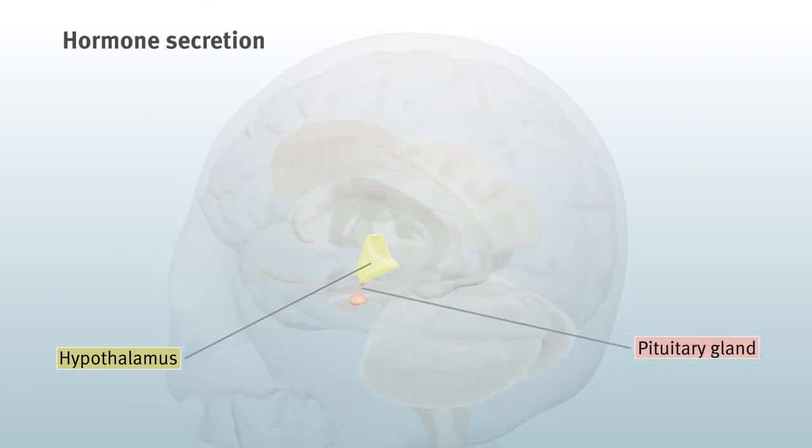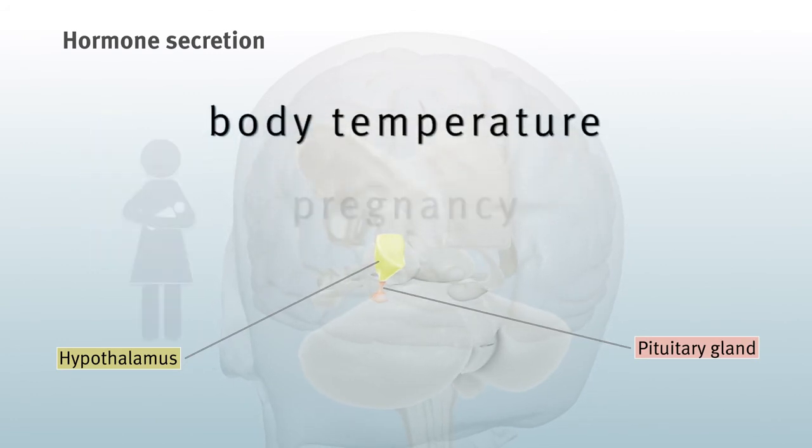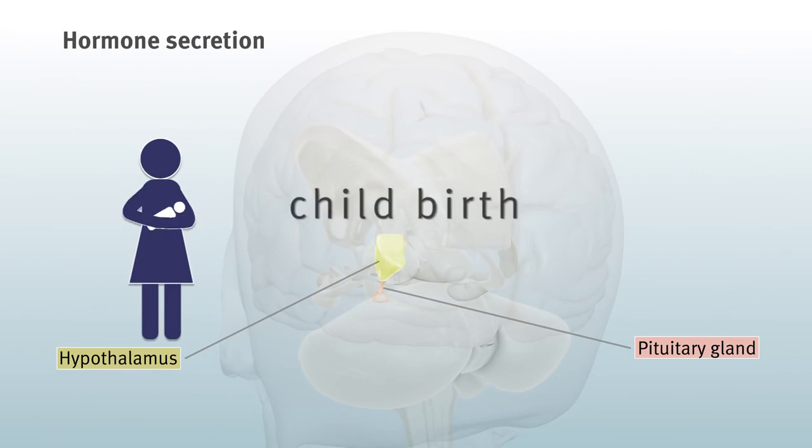The pituitary gland, often called the master gland, helps control growth, body temperature, pregnancy, and childbirth.